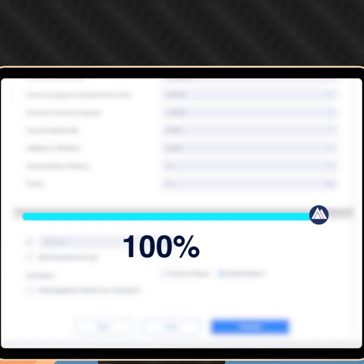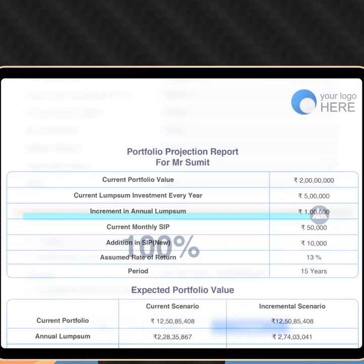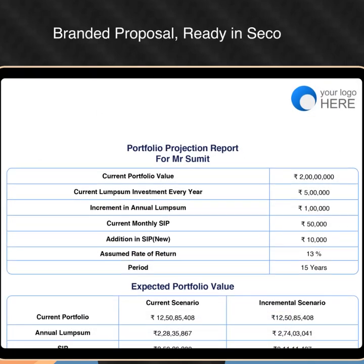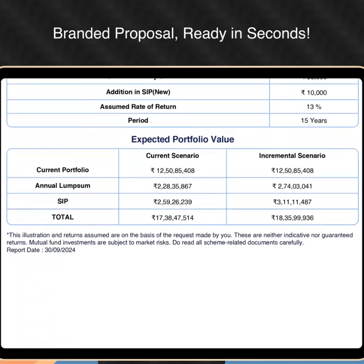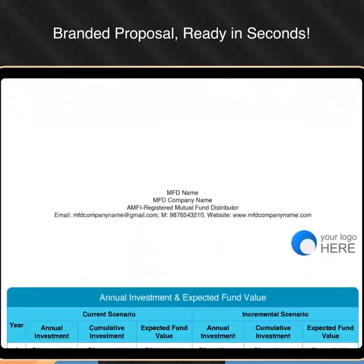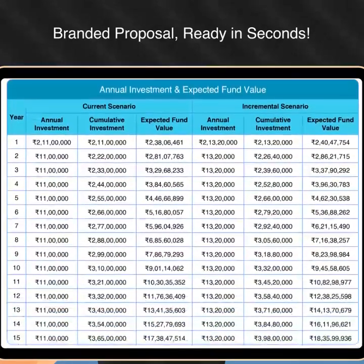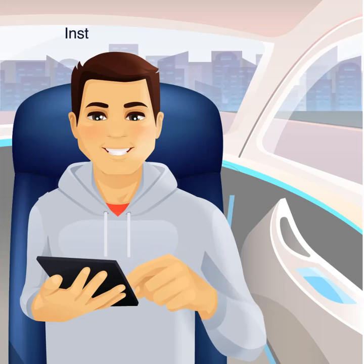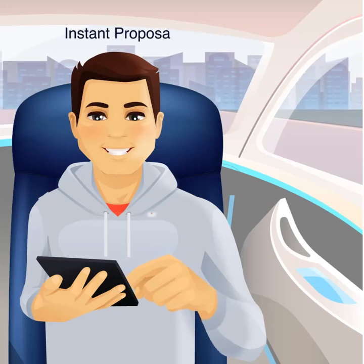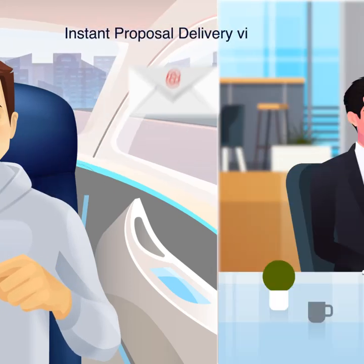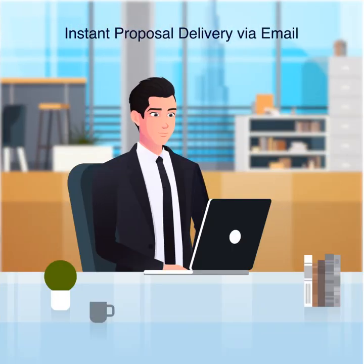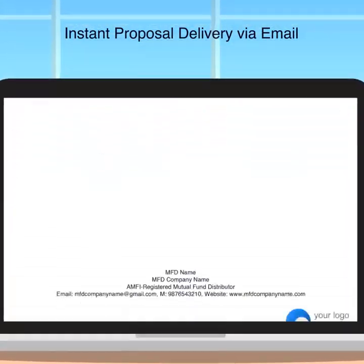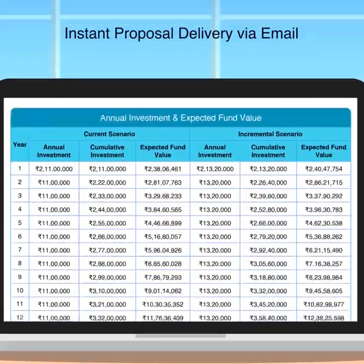Ravi generates a professional branded proposal that shows the future value of the portfolio based on Sumit's inputs — ready to download and share instantly. With just one tap, the proposal lands in Sumit's inbox, giving him all the clarity he needs for his investment decisions.